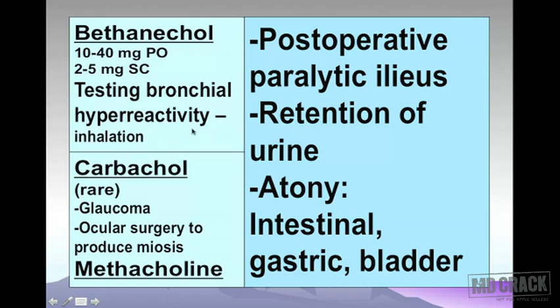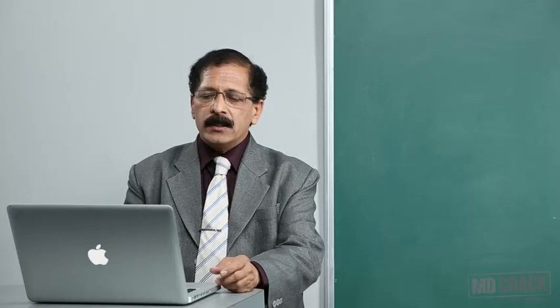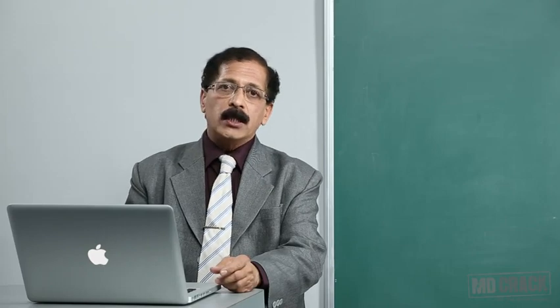Bethanechol is additionally useful to test bronchial hyperreactivity by the inhalation route. Carbachol is used rarely but can be useful in glaucoma and to produce miosis in ocular surgery. Methacholine is mostly used for post-operative paralytic ileus, retention of urine, and intestinal, gastric, and bladder atony.